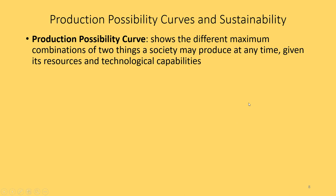Let's talk about how sustainability relates to the production possibilities curve, which you hopefully remember from Econ 3. The production possibilities curve shows the different maximum combinations of two things society can produce at any given time, given three assumptions: given its current level of resources, given its current level of technology, and that it's using those resources fully and efficiently. This is the maximum combinations of things we can produce as a society given those constraints.